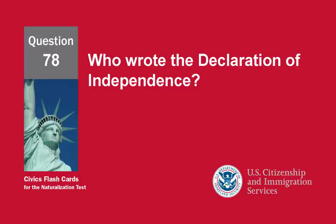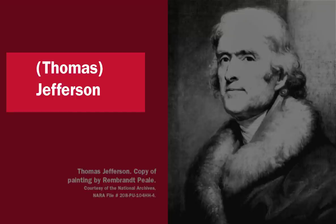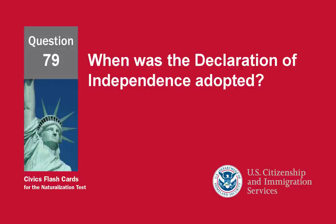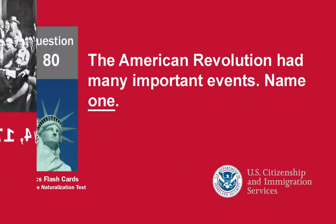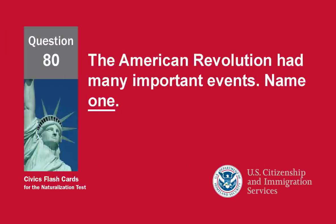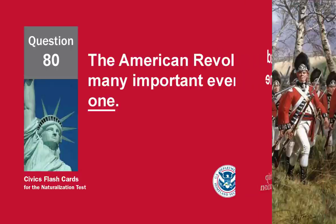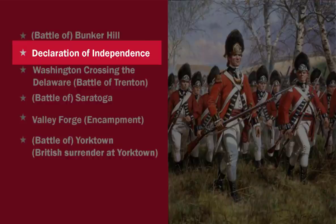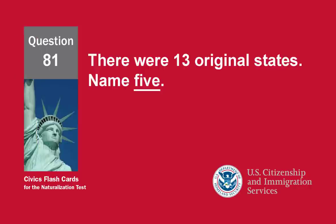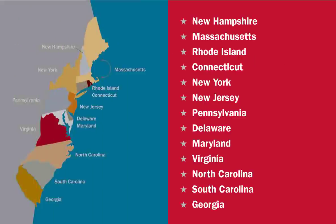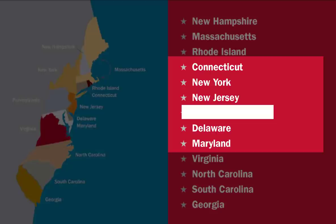Who wrote the Declaration of Independence? Thomas Jefferson. When was the Declaration of Independence adopted? July 4th, 1776. The American Revolution had many important events. Name one. Declaration of Independence. There were 13 original states. Name five. Connecticut, New York, New Jersey, Delaware, Maryland.